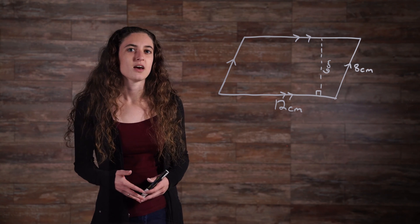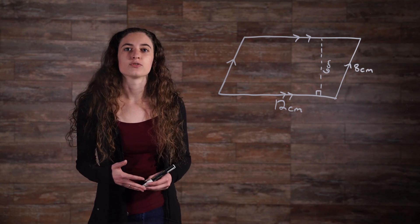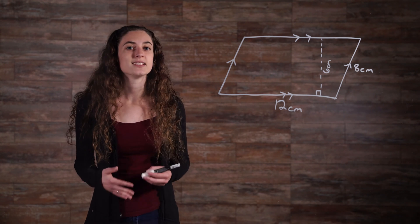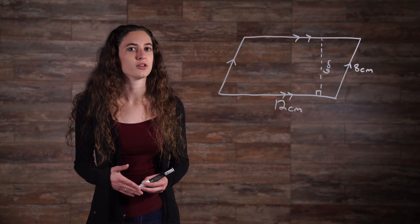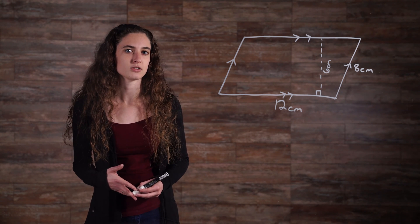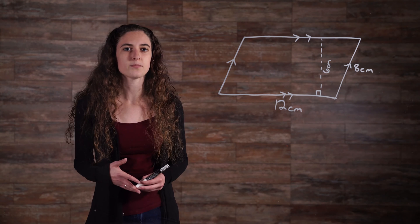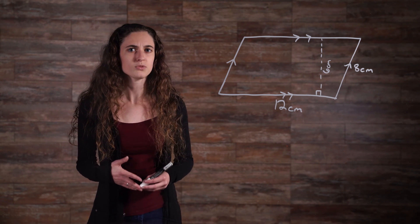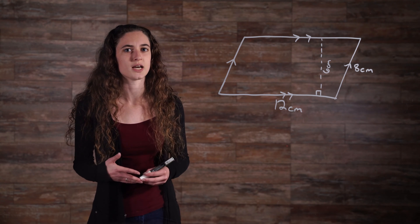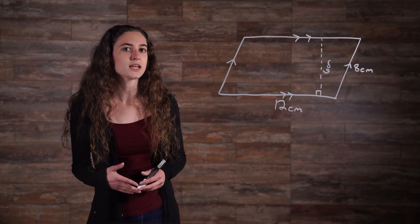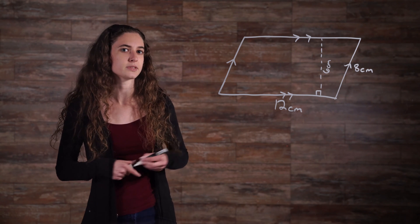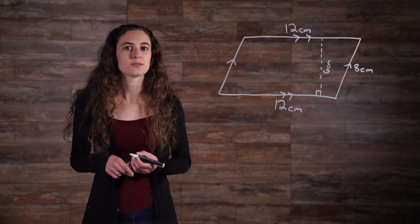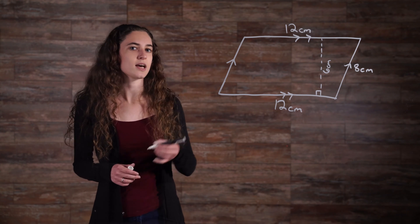What else can we see? The bottom side has a measure of 12 cm. The side on the right has a measure of 8 cm. And the dashed line inside the parallelogram has a measure of 6 cm. But since this is a parallelogram, we know that opposite sides are congruent. So we can label the other two sides as well. The top side has to be the same as the parallel bottom side, and the left side has to be the same as its parallel right side.